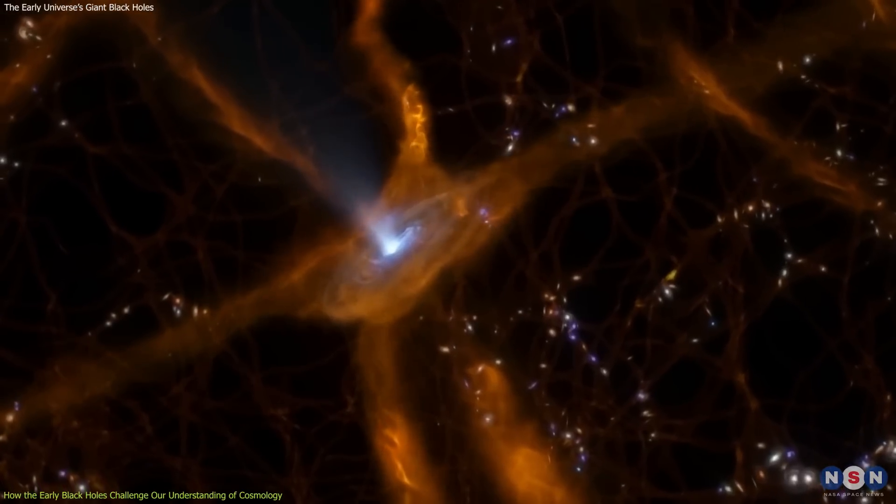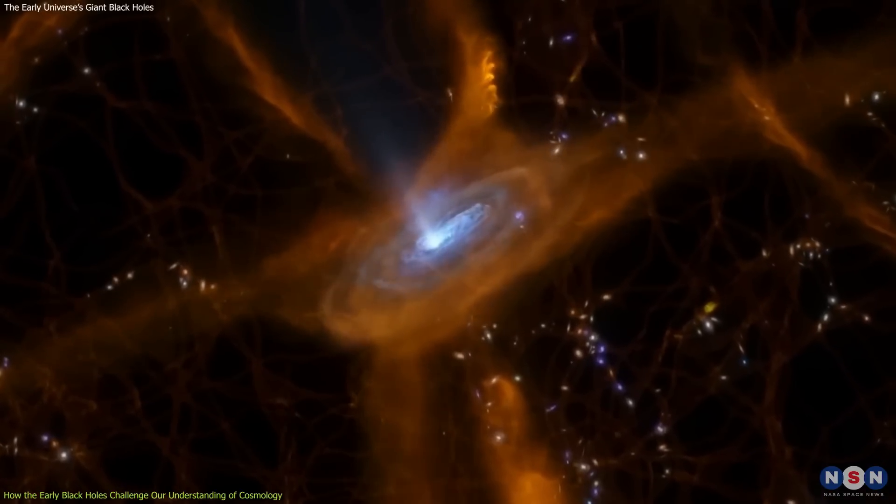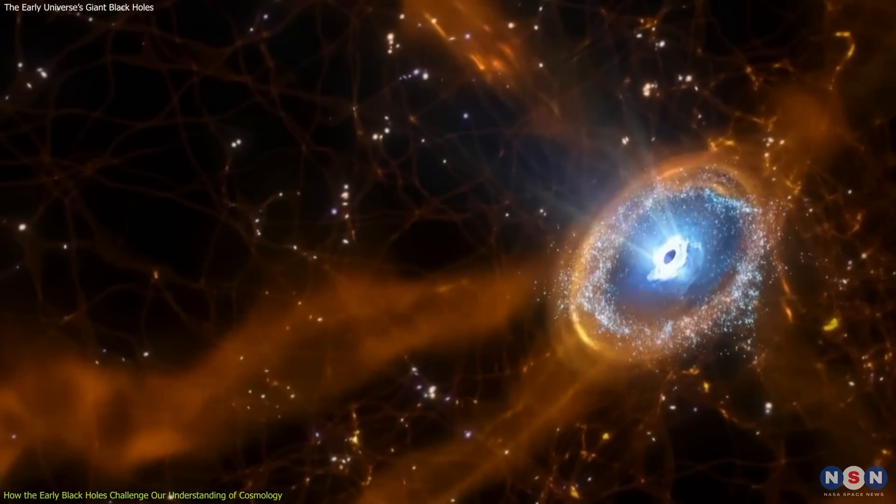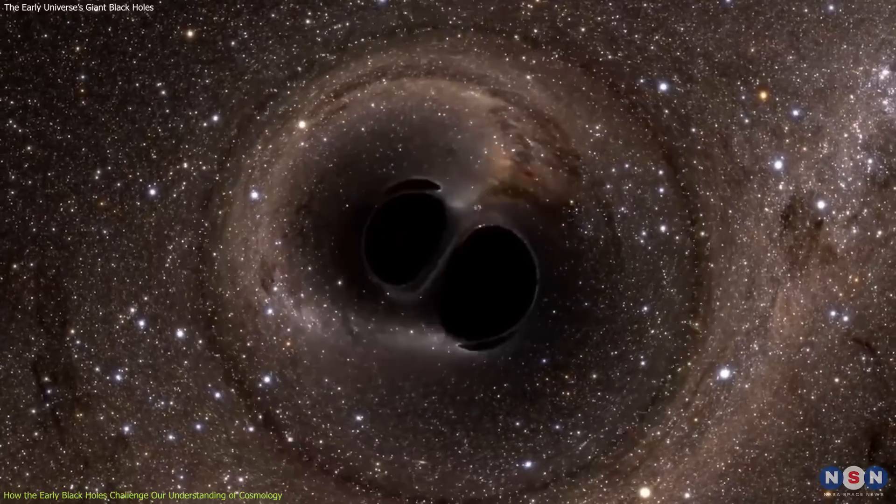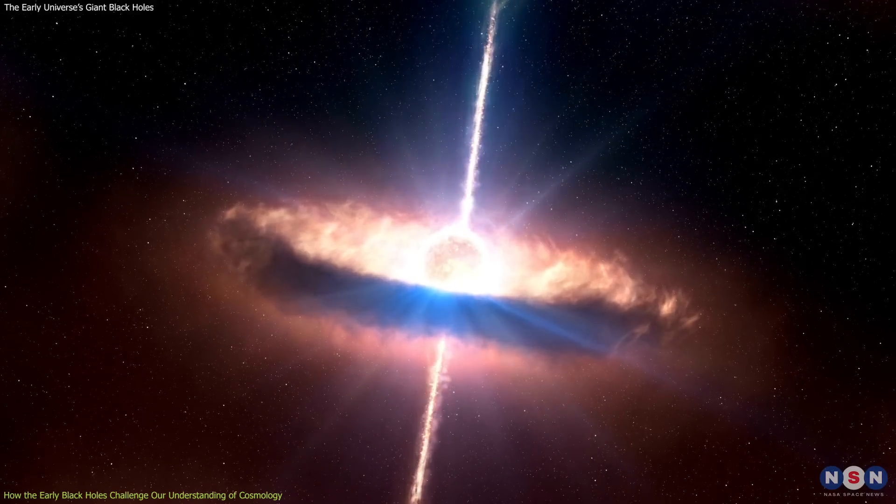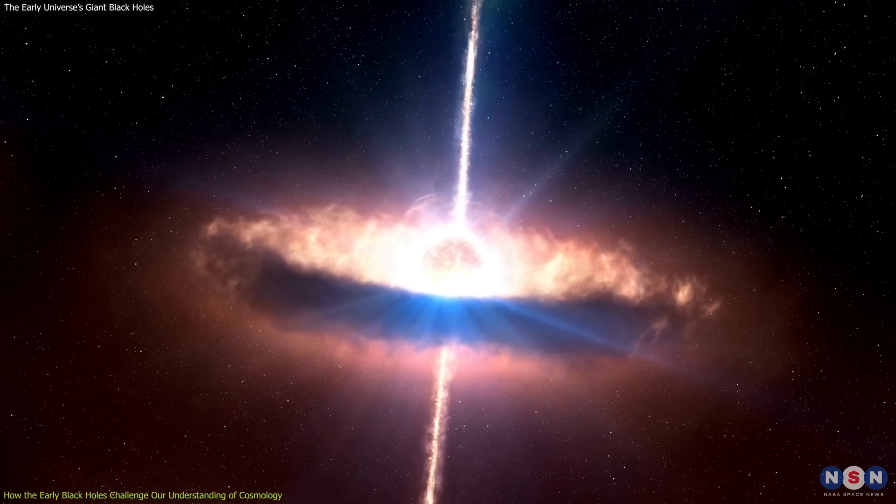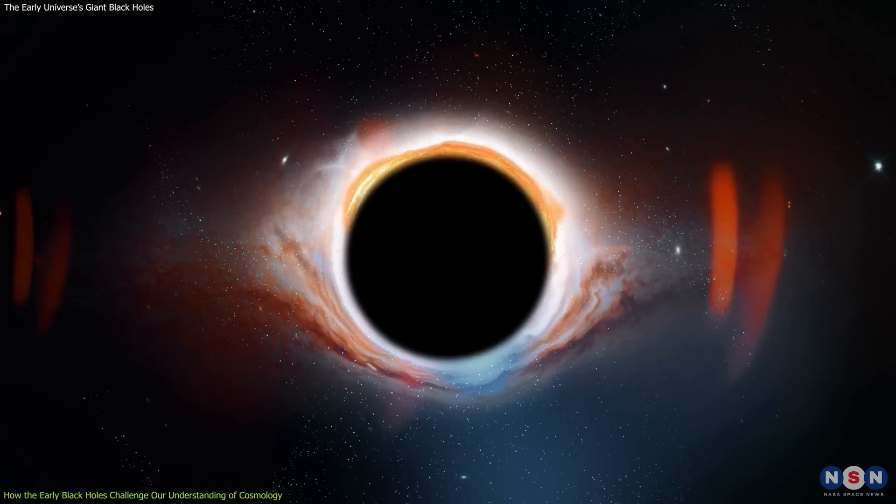Another possibility is that these supermassive black holes started as intermediate-mass black holes, which formed from the collapse of massive gas clouds or from the mergers of smaller black holes or stars. These intermediate-mass black holes could have masses between hundreds and thousands of times that of our Sun, making them easier to grow into supermassive ones.